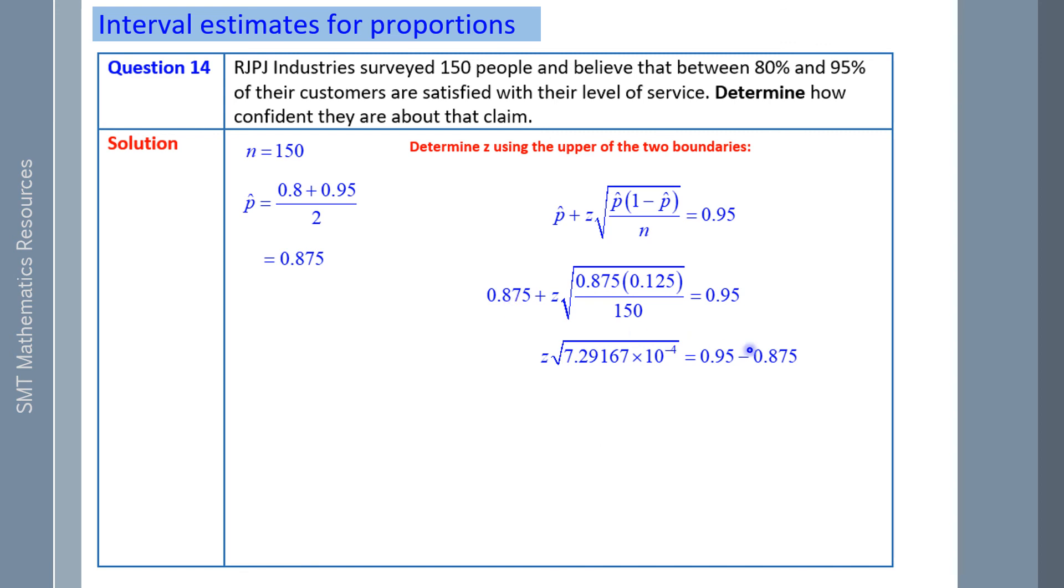Next, we're going to subtract 0.875 from both sides. And then underneath this radical sign, we simplify it. Next, we're going to divide both sides by this. And evaluating on a calculator, the z score was 2.78.